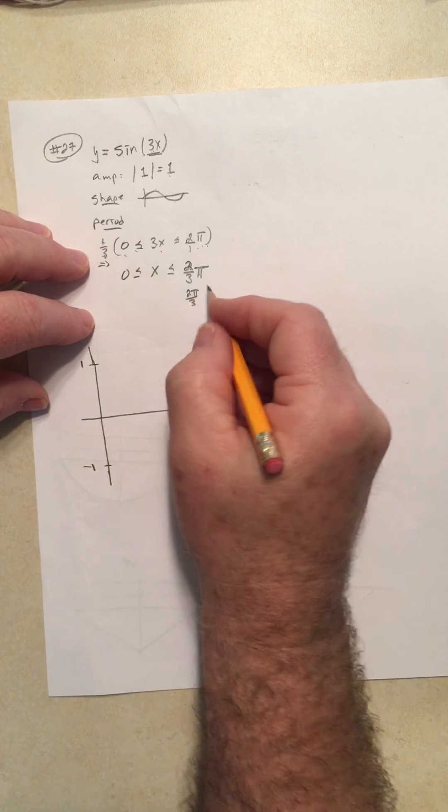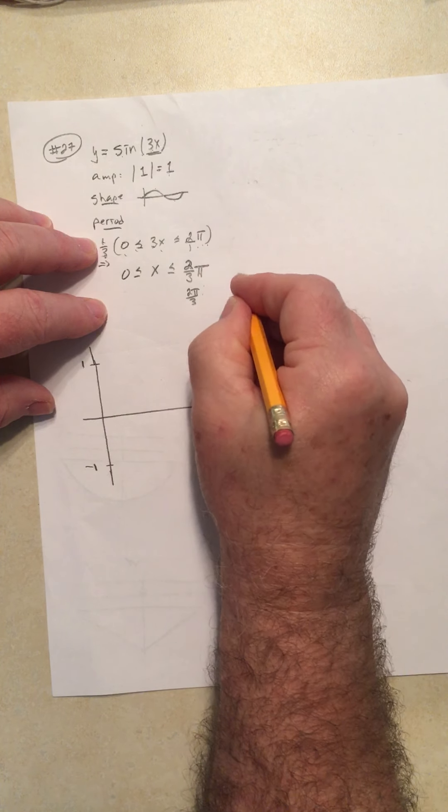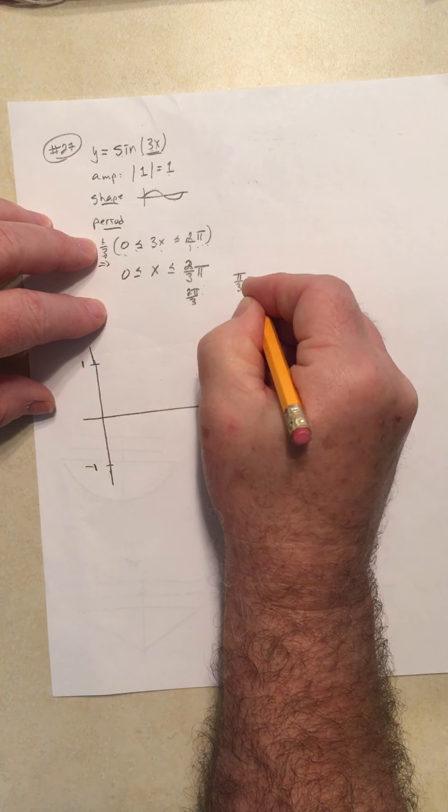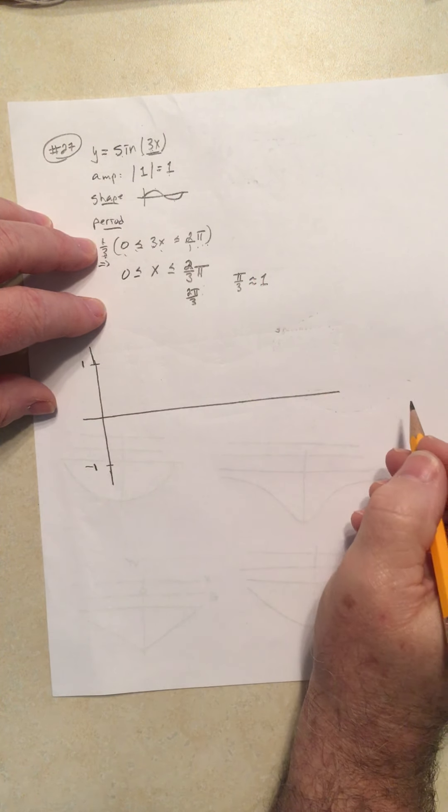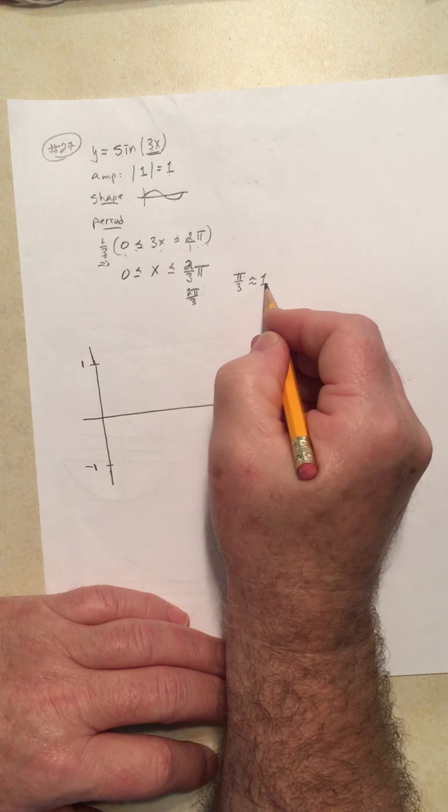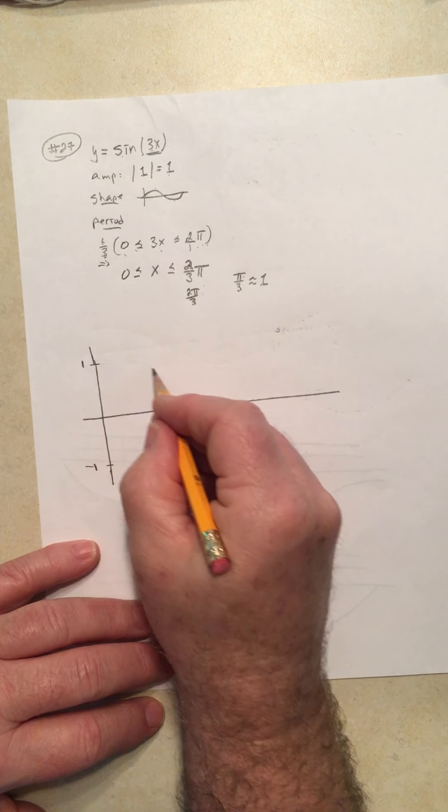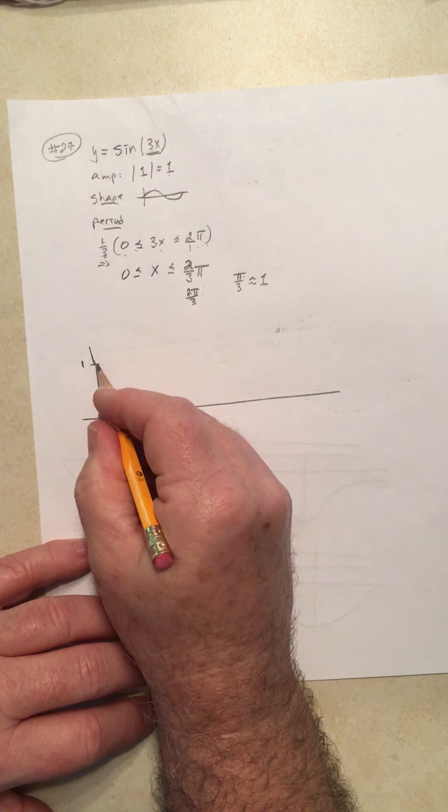Alright, so from our previous work, we remember from the previous example that π over 3 is approximately equal to 1. Pi is approximately 3, 3 divided by 3 is 1, so this is approximately 1.